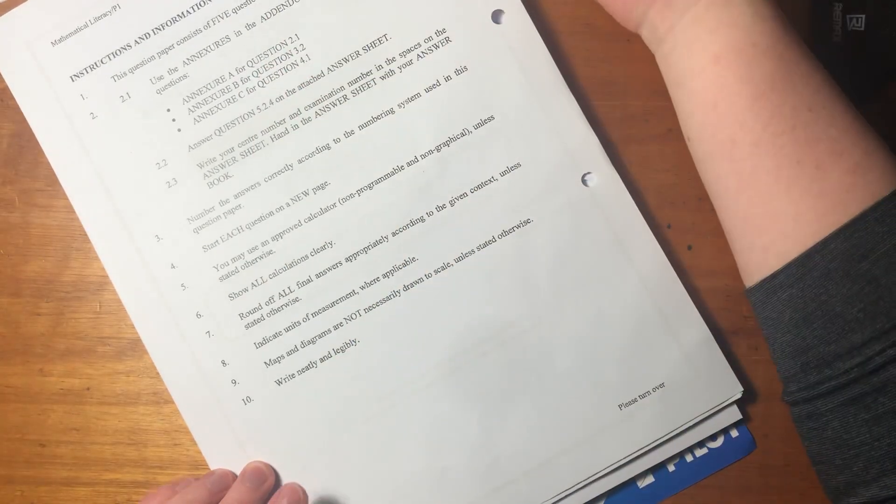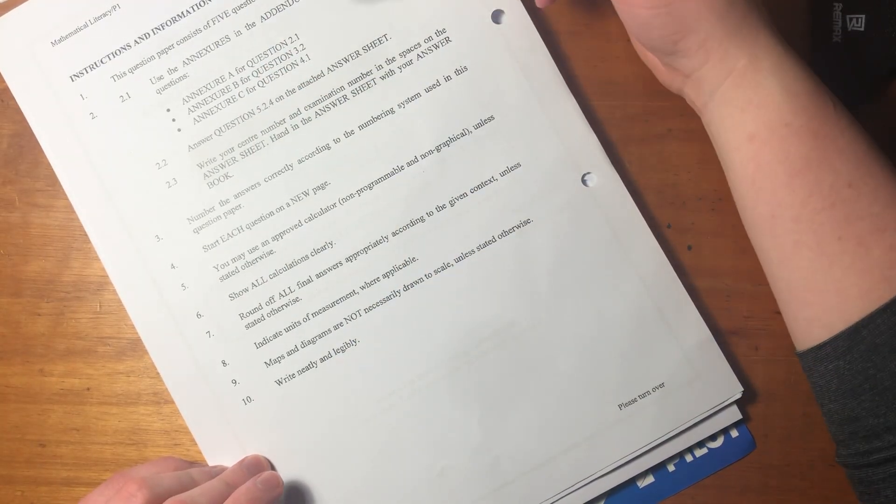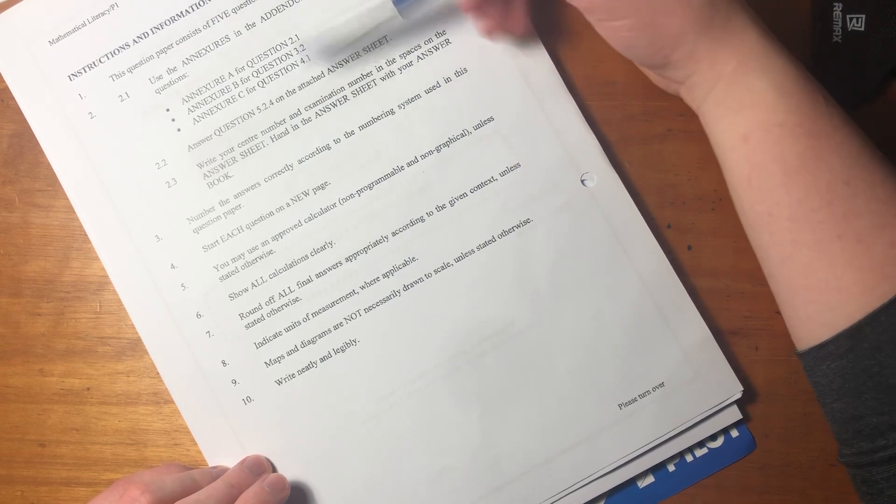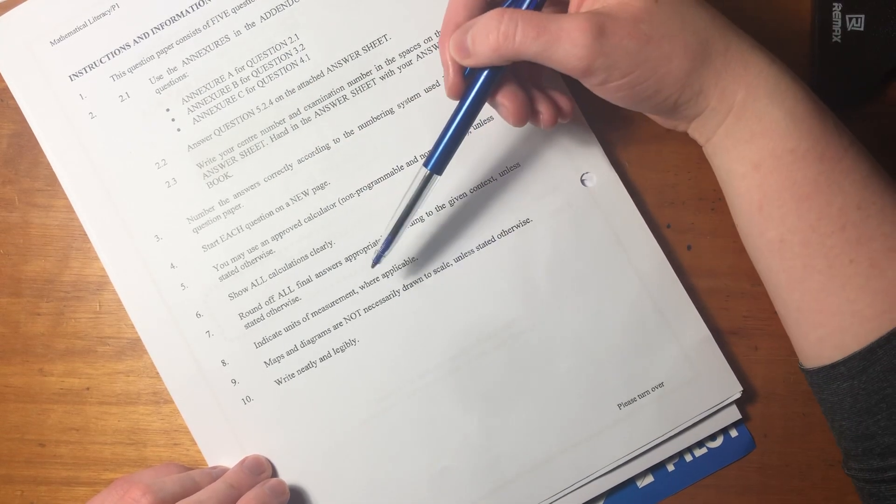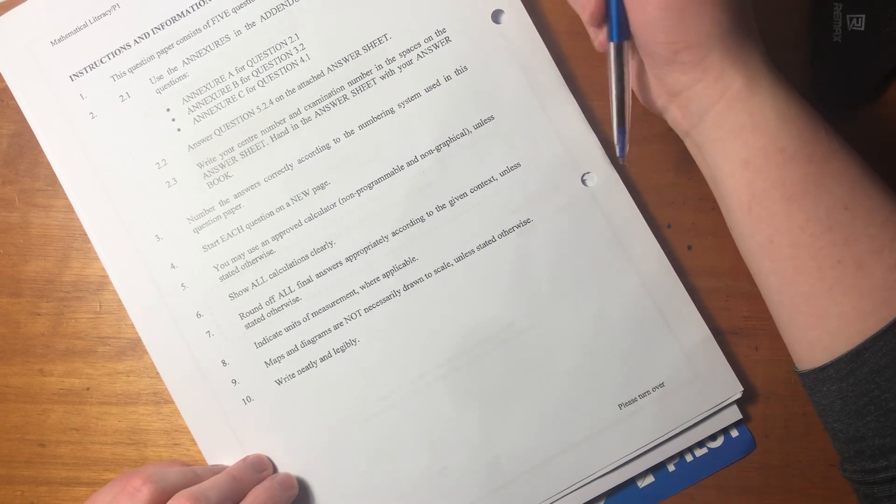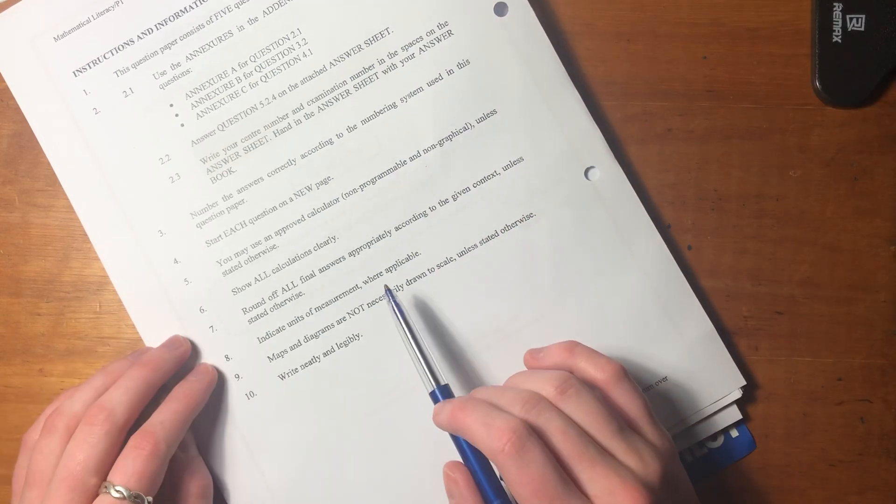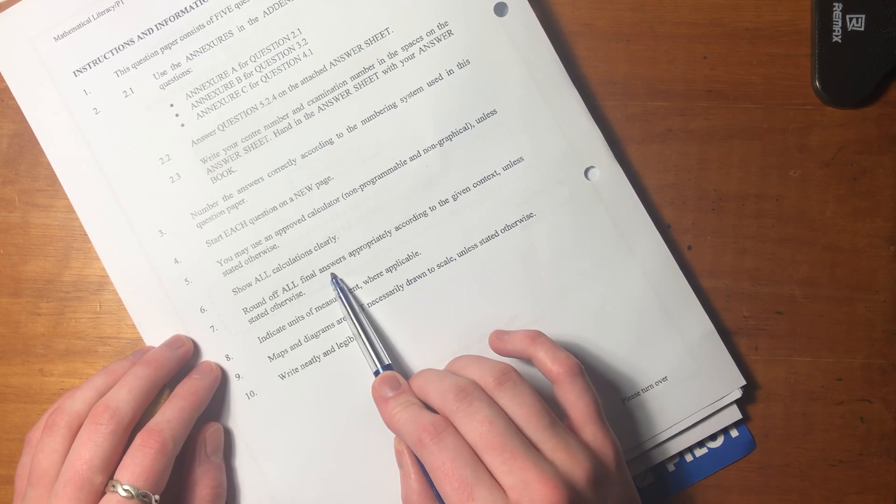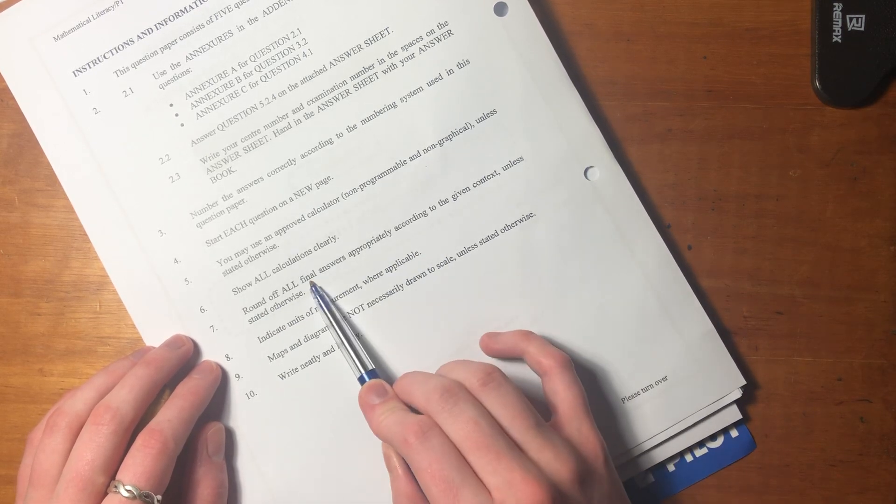Before we jump into question one, I want us to look at a couple of the instructions that we get on this first page. This is often a part of the paper that students don't really look at, but there's two things I want to draw your attention to. One is that we can only round off all our answers at the end, our final answers.